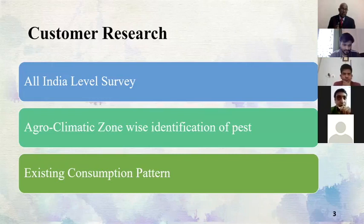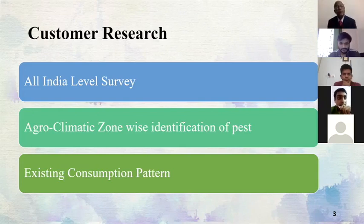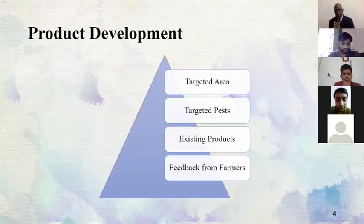Before pushing our product we need to understand the farmer, and only then can we achieve customer excellence. We also have to consider existing consumption patterns, because we cannot expect that we will introduce a new product and the farmer will change his consumption pattern overnight. We need to understand his habits and cater to his needs — only then can we achieve customer excellence.